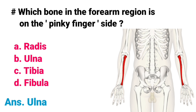Which bone in the forearm region is on the pinky finger — that means little finger — side? A) Radius, B) Ulna, C) Tibia, D) Fibula. Correct answer is option B, Ulna. In the forearm region, the ulna bone is on the pinky finger side.